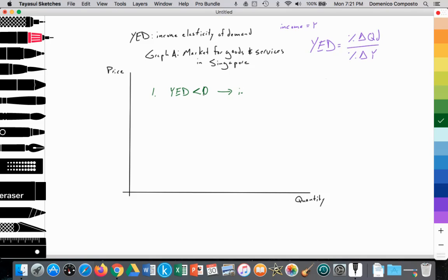Let's start with this. If YED is less than zero, that indicates that the good is an inferior good.